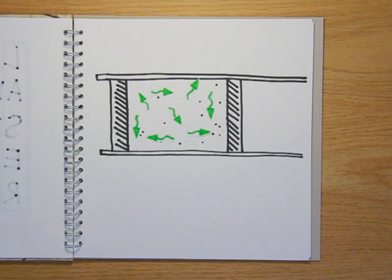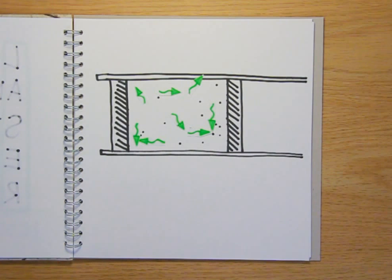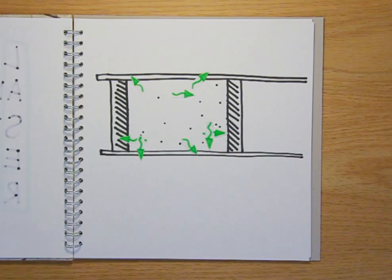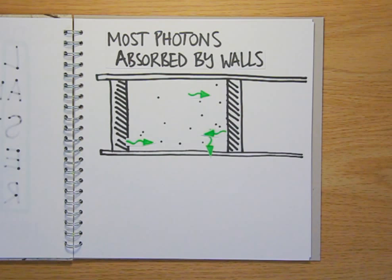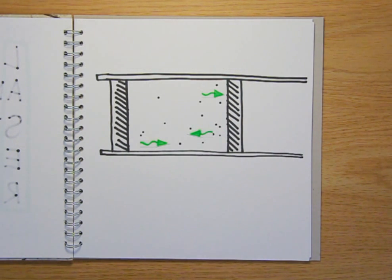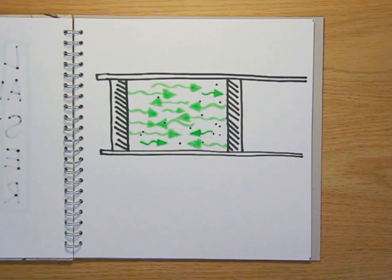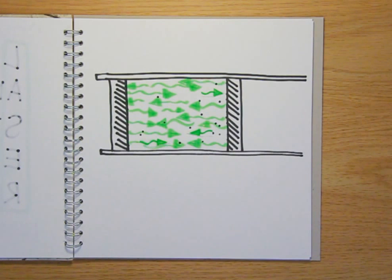To begin with, photons will be spontaneously emitted from the excited atoms in all directions. But most of these are absorbed by the walls of the cavity, except for those bouncing back and forth between the two mirrors at each end, which hit the excited atoms along the way and amplify themselves.